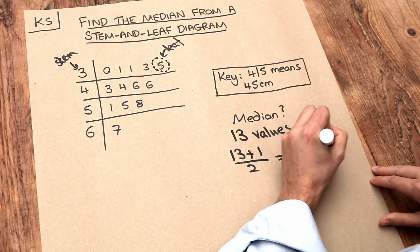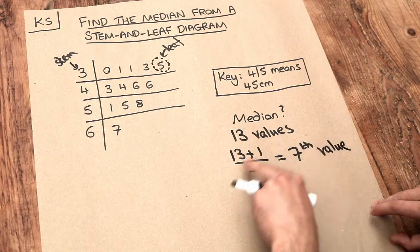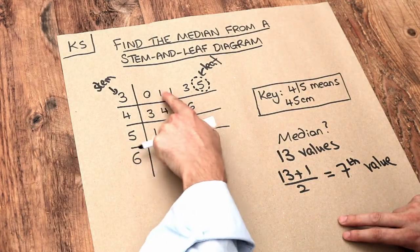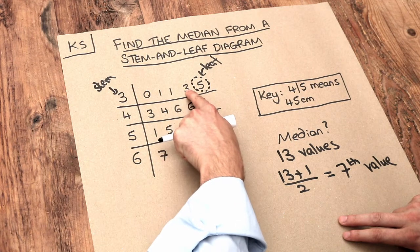So then we just have to count along our stem leaf diagram. First value, second, third, fourth, fifth, sixth, seventh. So it's this value here.